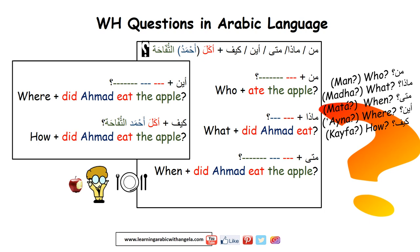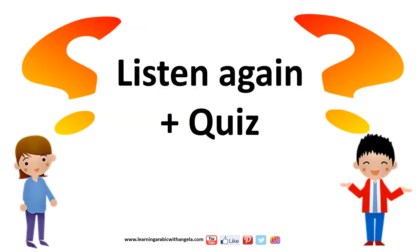Let's take another example: أكل أحمد التفاحة — Ahmad ate the apple. WH-questions using this sentence: من أكل التفاحة؟ — Who ate the apple? ماذا أكل أحمد؟ — What did Ahmad eat? متى أكل أحمد التفاحة؟ — When did Ahmad eat the apple? أين أكل أحمد التفاحة؟ — Where did he eat the apple? Now listen to the conversations again and then there's a small quiz to test your knowledge.